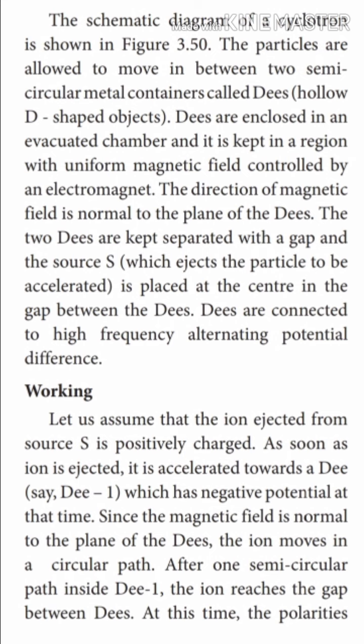Let us assume that the ion coming out from the source S is positively charged. As soon as the ion is ejected, it is accelerated towards D1, which has a negative potential at that time.